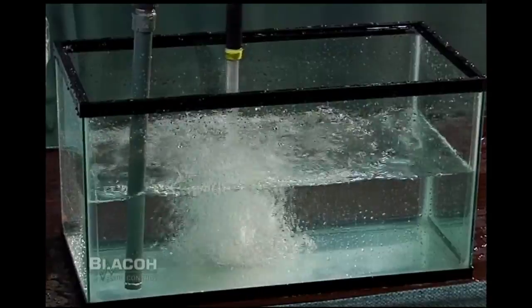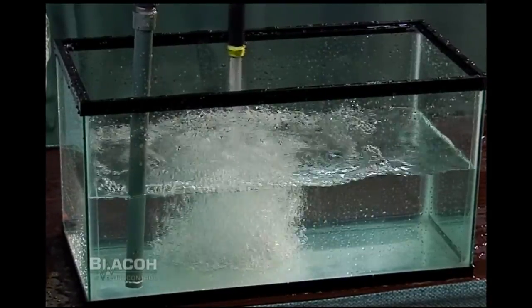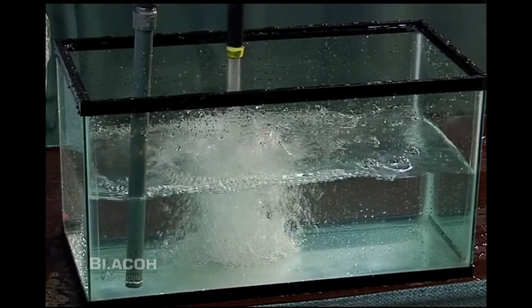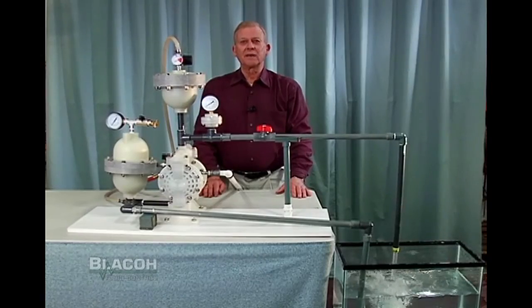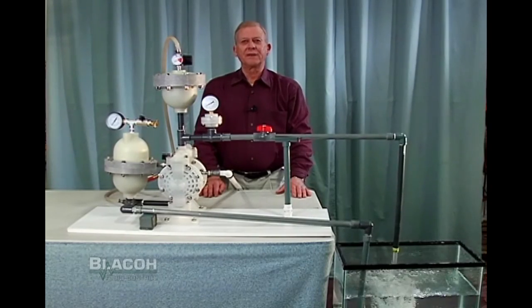Now you can see that the water hammer spike has been eliminated and the system is running efficiently and the pump is at its maximum performance. If we had a positive inlet pressure in the pump, instead of pulling a vacuum in the stabilizer, we would put a positive pressure in it.